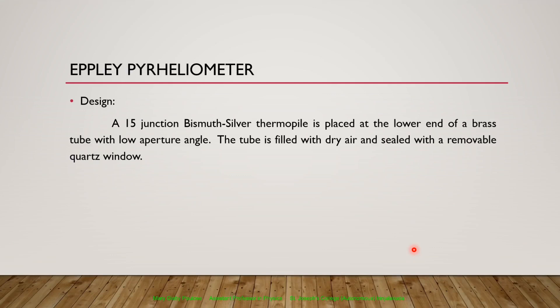This is the pyrheliometer — the direct radiation instrument. We studied three types of pyrheliometers: the Ångström compensation pyrheliometer, the Abbot silver disc pyrheliometer, and the Epli pyrheliometer. That's all for today. Thank you.